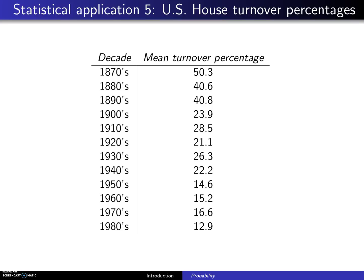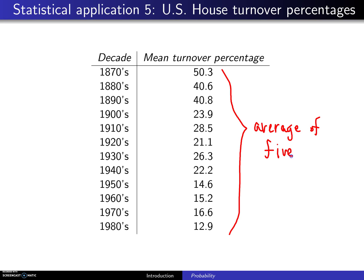Here's the fifth and last of the statistical applications. This one involves the United States House of Representatives turnover percentages. As you can see from the table below, you have decades that run from the 1870s to the 1980s, and the mean turnover percentages are given here. Because the US House of Representatives has an election every two years, these mean turnover percentages are the average of five different turnover percentages, so there is going to be more stability in these numbers.